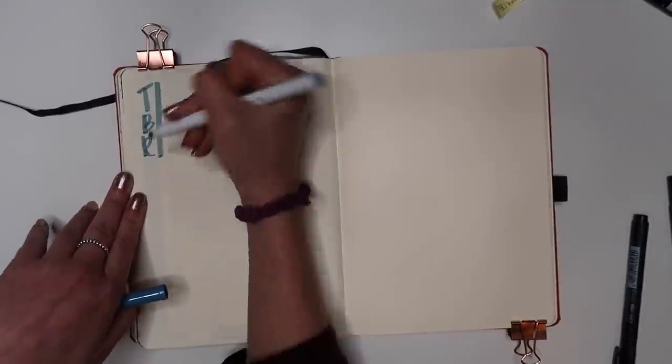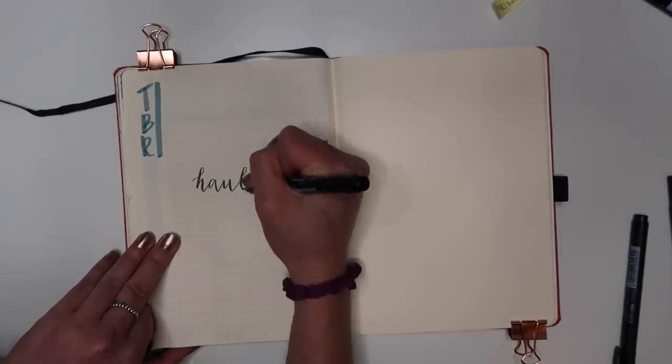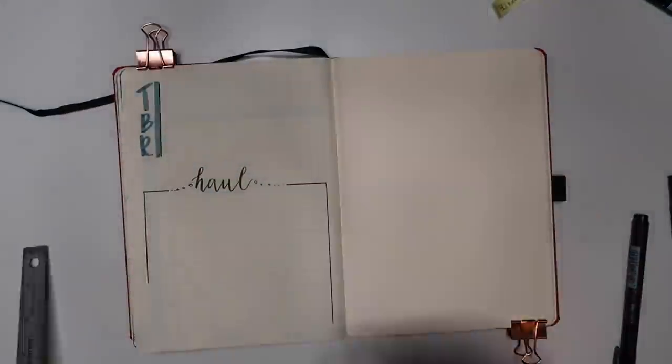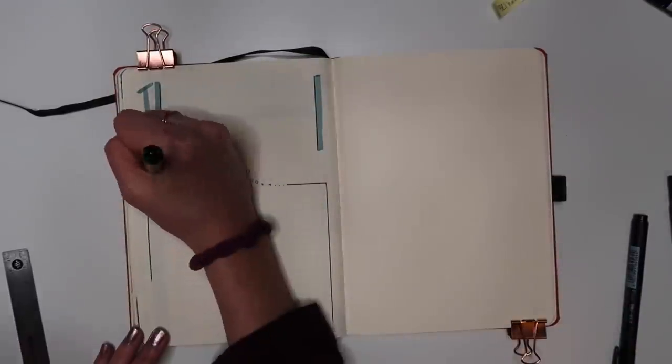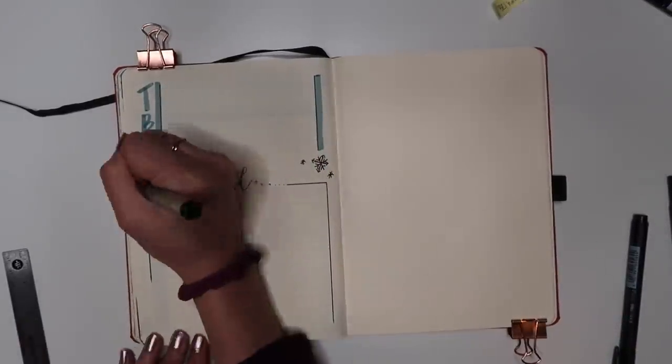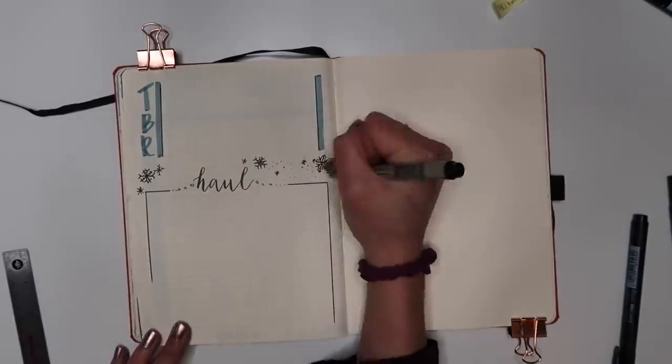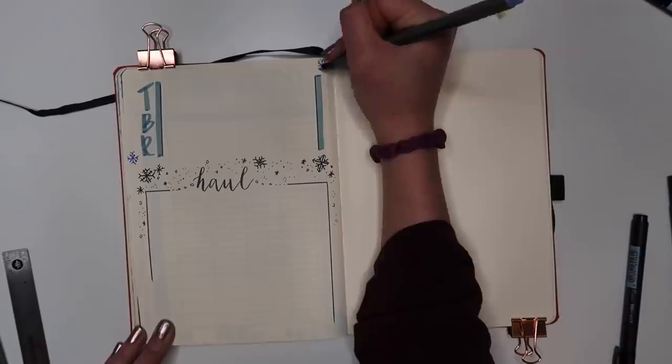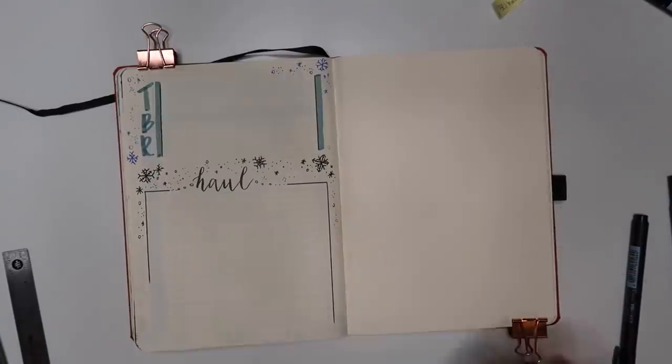And here we're just doing my TBR haul and quotes page. Again this one is always the one that ends up being my favorite. It just has so much room to grow because it's so simple and I do end up saving that spot in the bottom left corner of the haul part for a little doodle that we're going to do later and I absolutely loved how the doodle came out so I hope you guys do too.